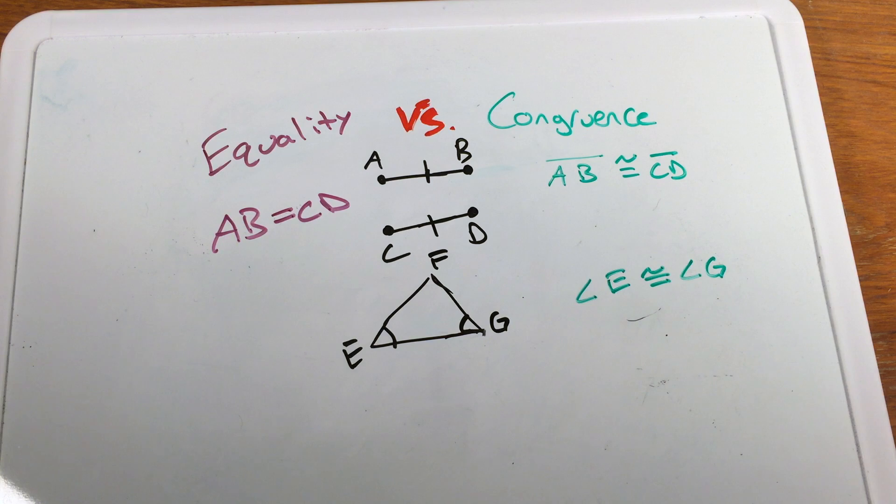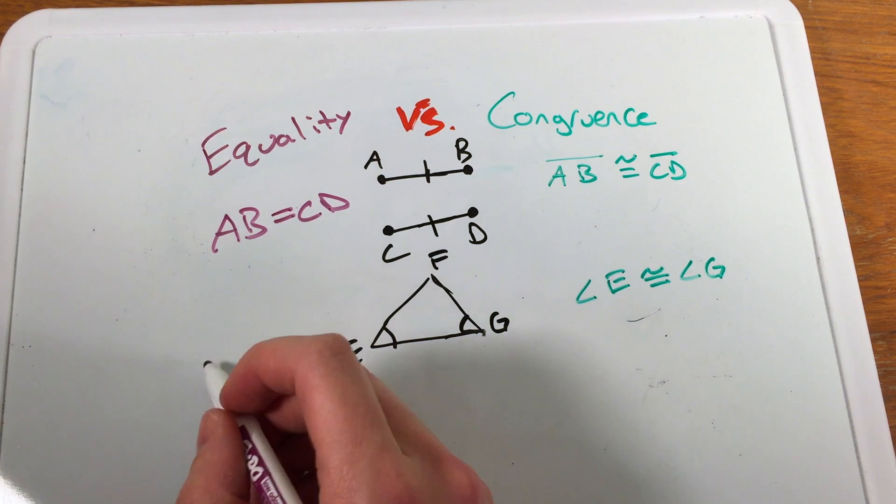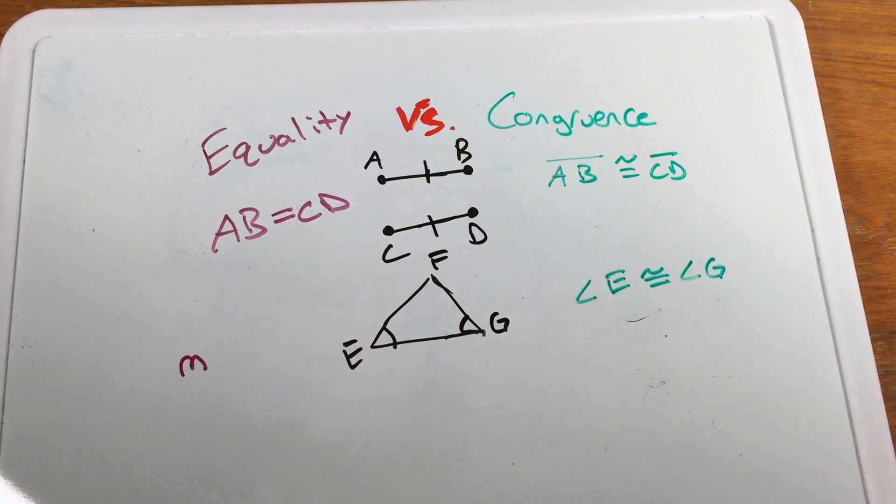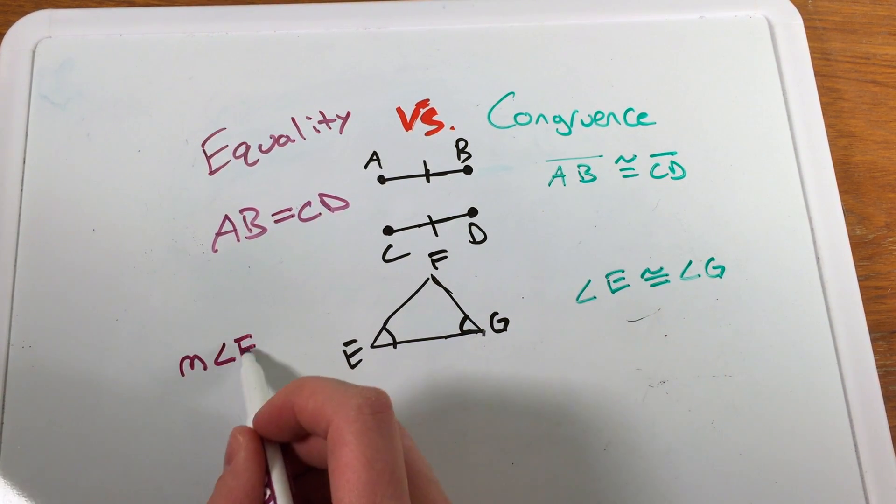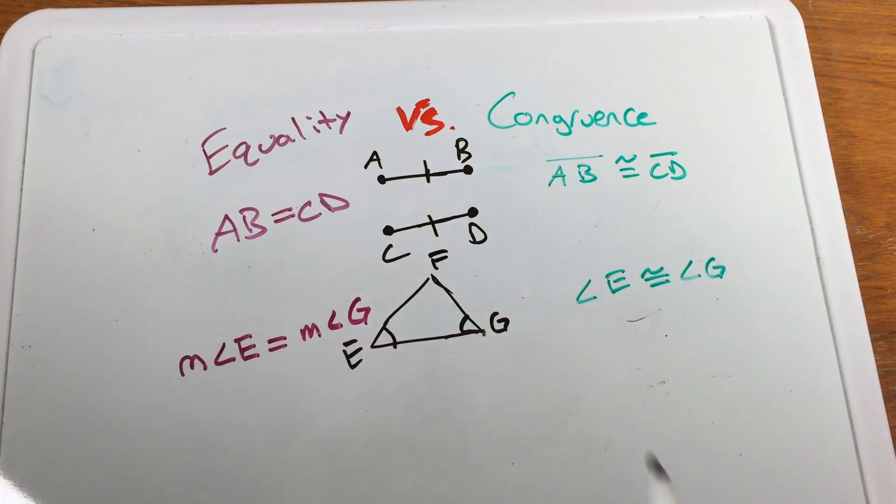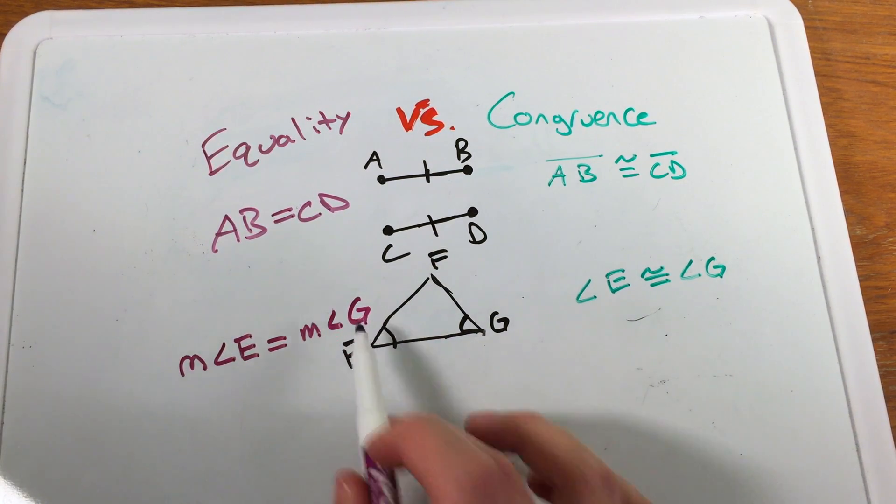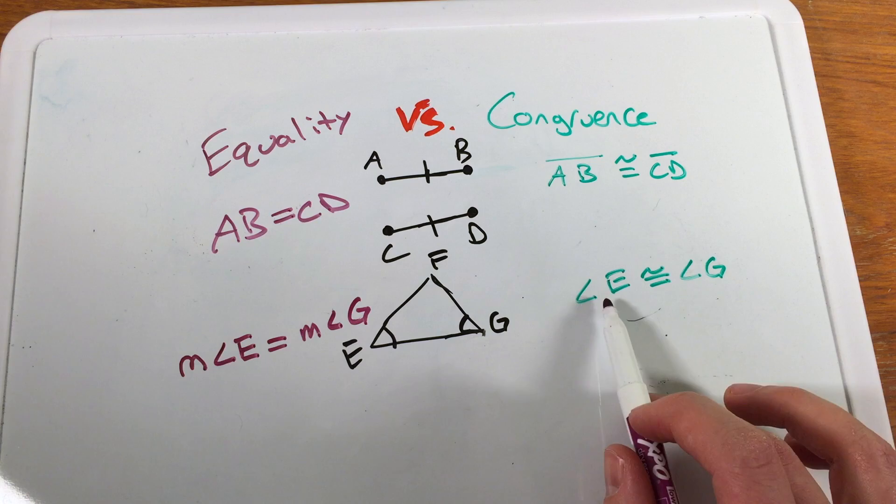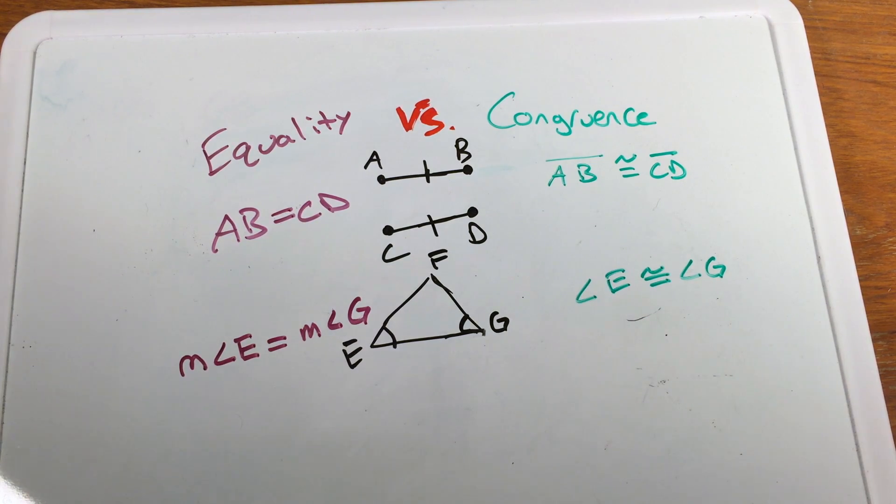But if I want to refer to the measurement of these angles, whatever they are—really doesn't matter what the measurement is—but the measurement itself, I would have to write that the measurement of angle E is equal to the measurement of angle G.